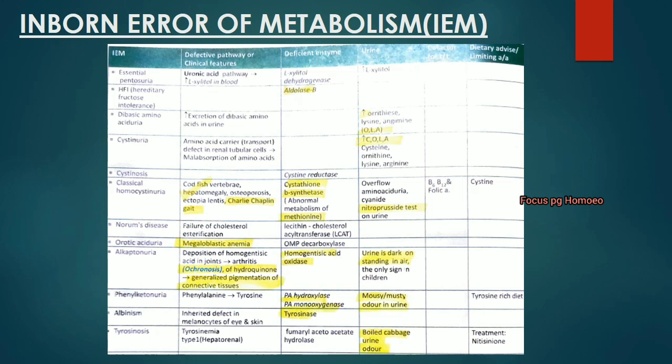The patient with homocystinuria presents with codfish vertebrae, hepatomegaly, osteoporosis, ectopia lentis and Charlie Chaplin gait. Norum's disease has deficiency of lecithin cholesterol acyltransferase (LCAT), presenting with failure of cholesterol esterification.